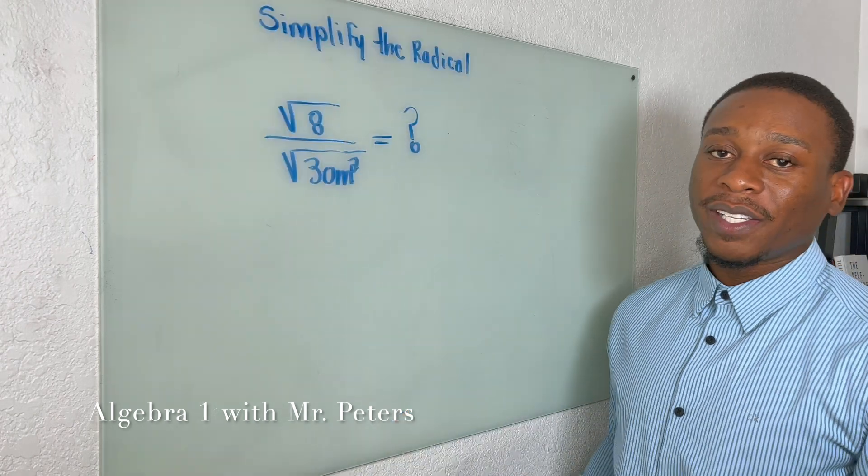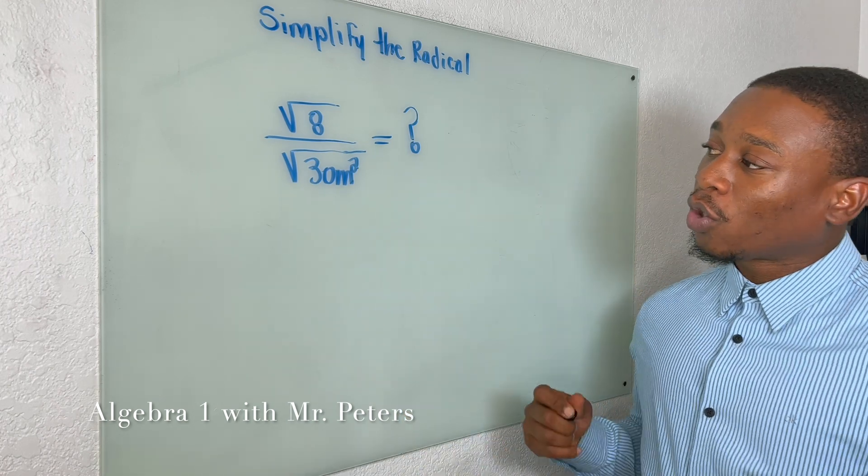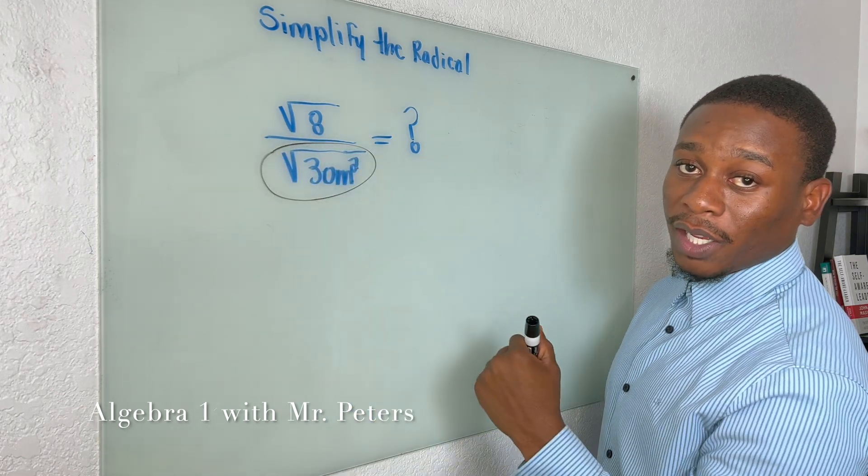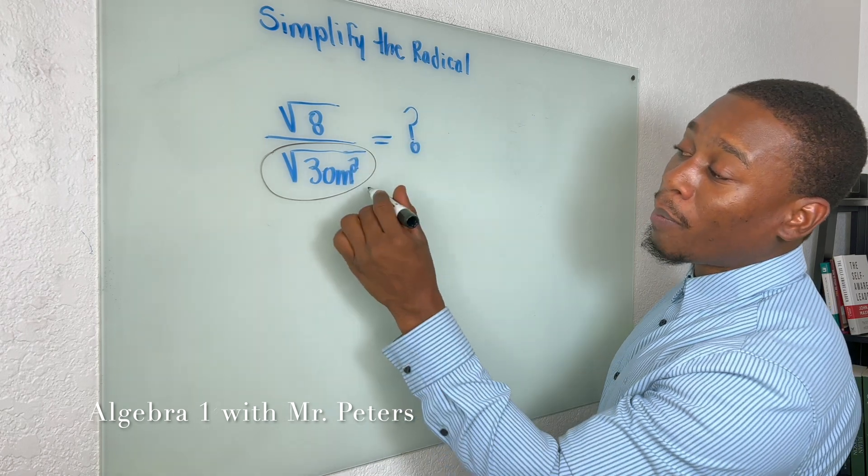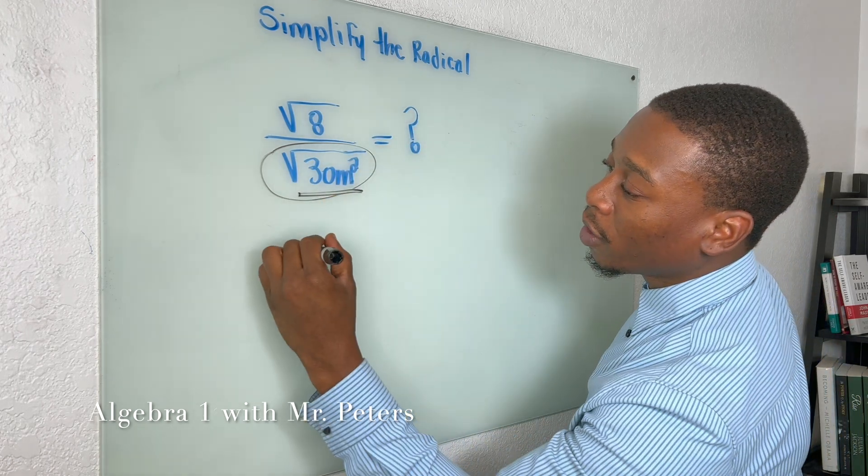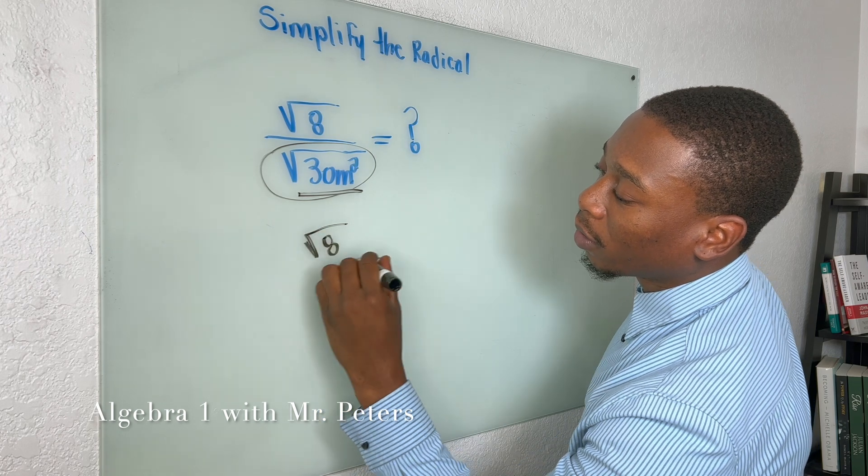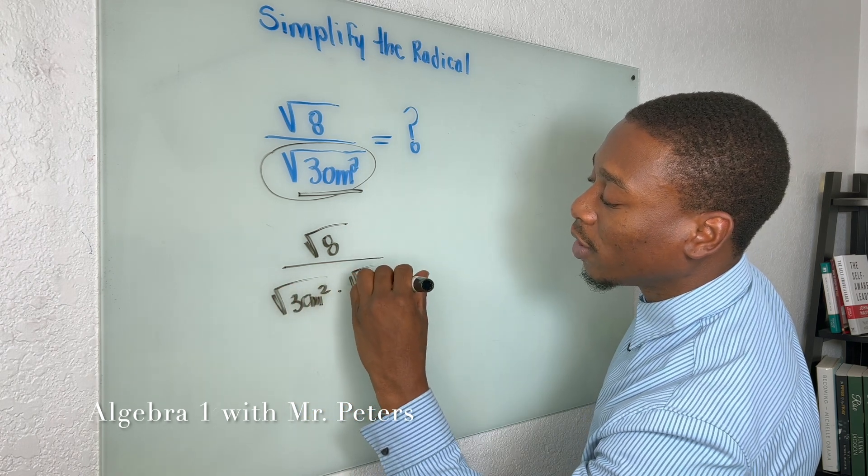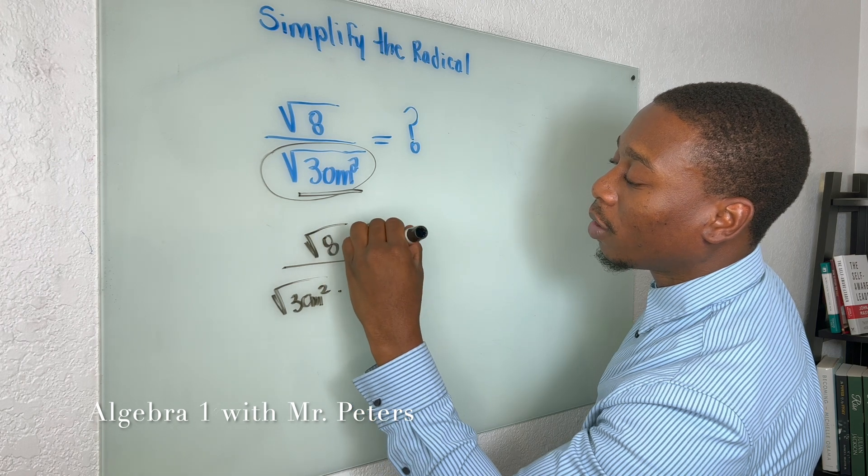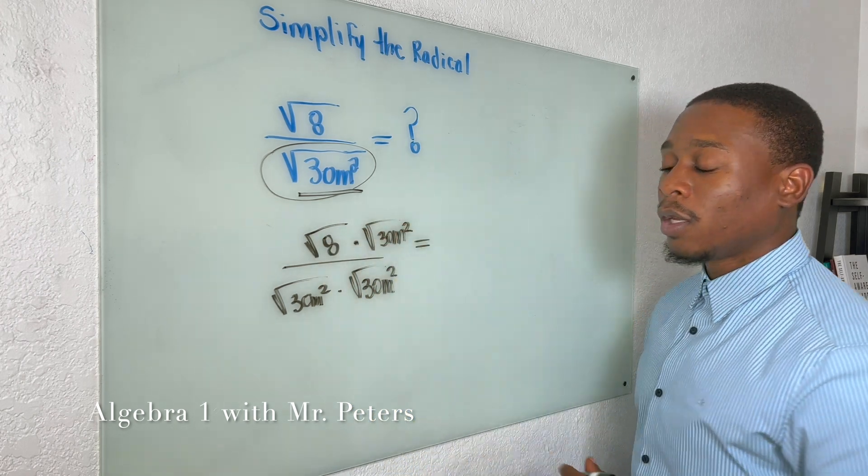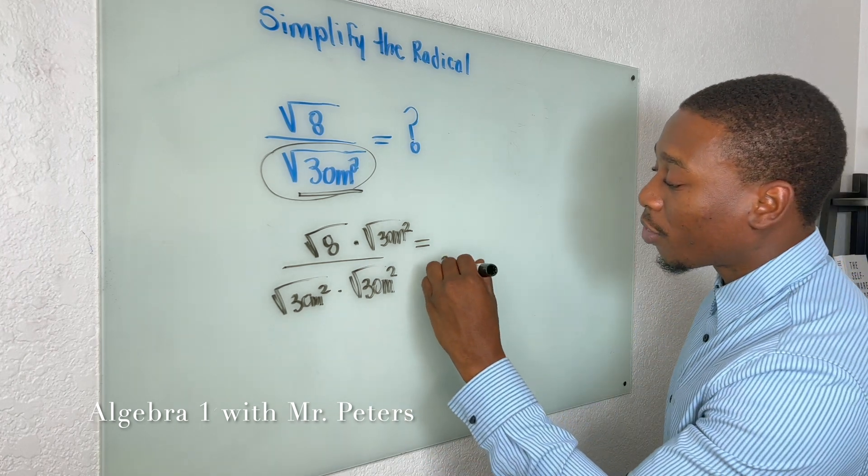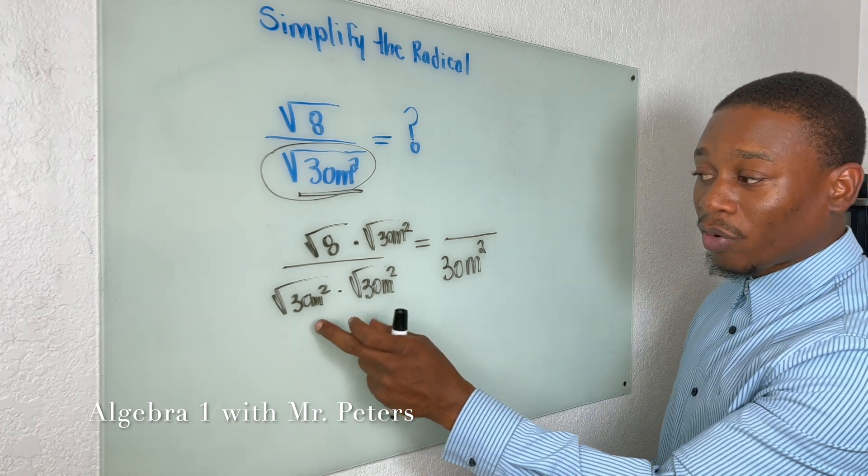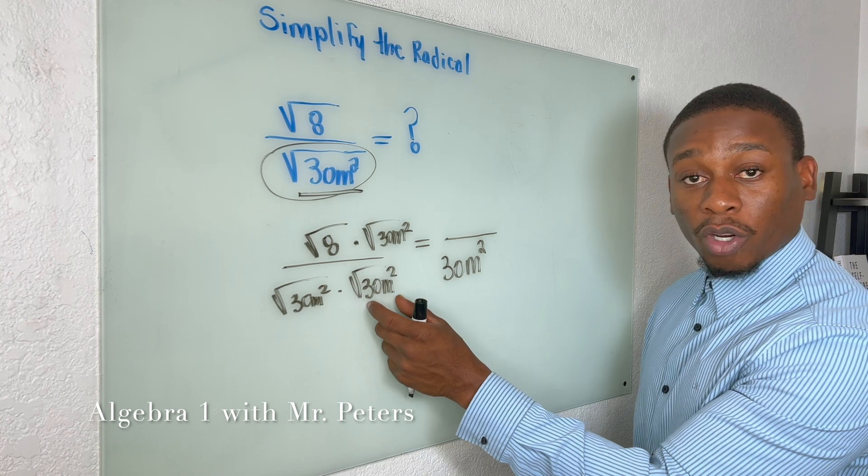In our next problem guys, we're working with simplifying radicals with a fraction. So very important rule: we cannot have a fraction where there's a radical in the denominator. So we have to rationalize it, meaning multiply the top and bottom by this radical. So once we do that, we're going to have √8, right? And let's do the bottom first. So we're going to have √30m² times itself. That's what we mean when we say rationalize it.